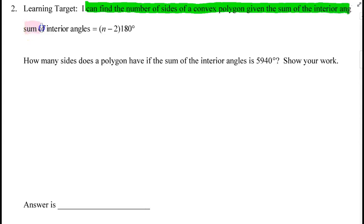In class we learned that the sum of the interior angles is (n - 2) times 180. Looking at problem number 2: how many sides does a polygon have if the sum is 5940 degrees? We're going to use the formula above.